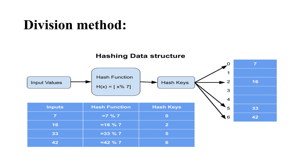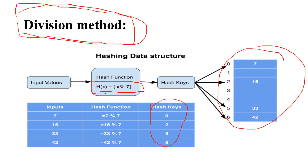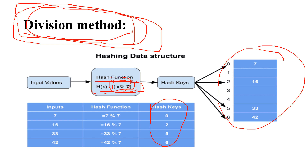In the division method you are given input values 7, 16, 33, and 42. Using the hash function you calculate the index for all elements and store them in the table — that's the division method. The name says it all: division means you divide to get the index, and division here is modulus, so it's also called the modulus method. To conclude: we learned how hashing works, the types of methods used to calculate the index, and specifically the division method. Thank you for watching.